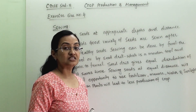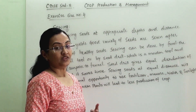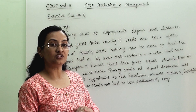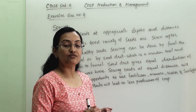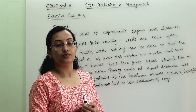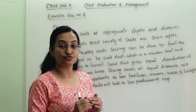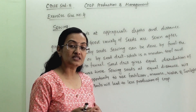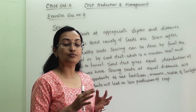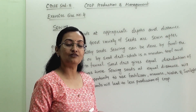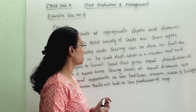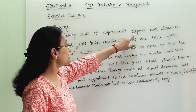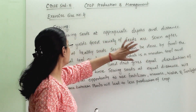Our second paragraph is about sowing. Sowing is done after the preparation of the soil. Why after preparation of the soil? So that the soil will have proper manure mixed in and will be properly leveled, which will be helpful for the sowing.